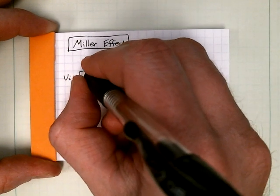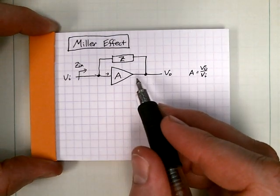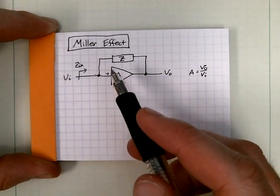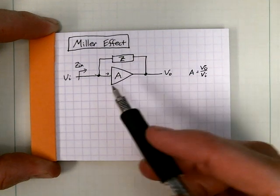We want to see what zin is, and that's a little harder to calculate. We can see that already it's not just z. It would be z if this end was tied to zero.